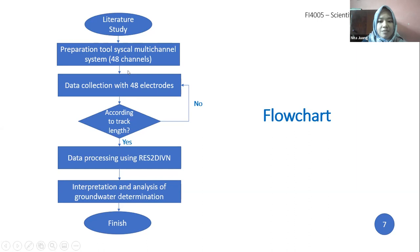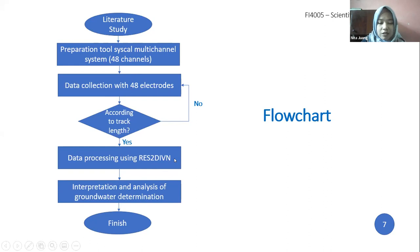If the total track length matches, the data is processed using RES2DINV software. If not, data overlapping is resumed. After processing the data with RES2DINV software and obtaining the inversion values, the inversion results are then obtained.